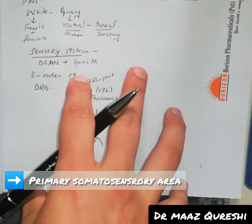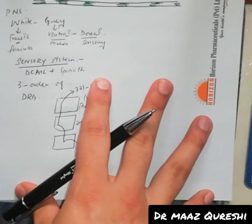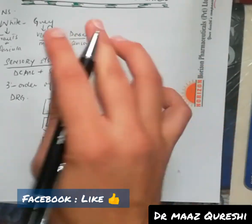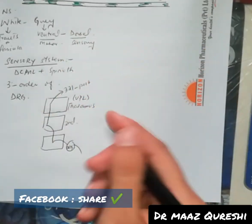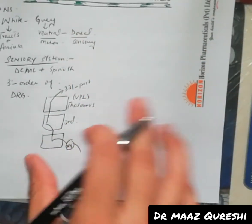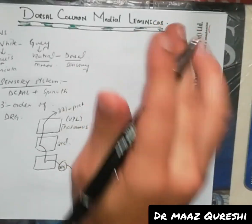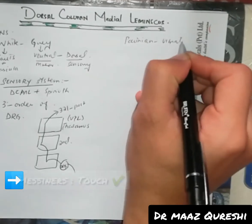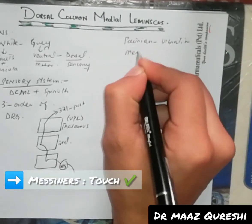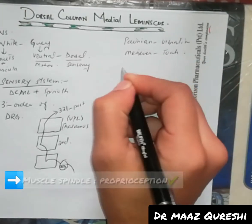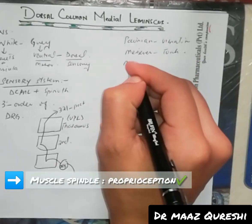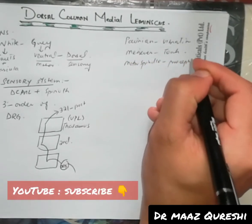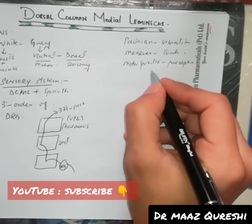Now jumping into the topic: the Dorsal Column Medial Lemniscus involves three main receptors. First is the Pacinian corpuscle, which is used for vibrations. Second is Meissner's corpuscle, which is responsible for touch. Third is the muscle spindle, which is responsible for proprioception. These are the functions of the Dorsal Column Medial Lemniscus.